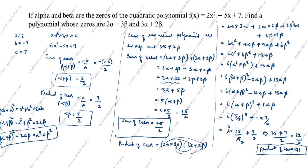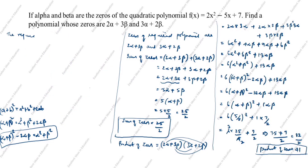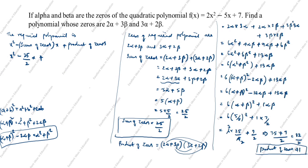Now we will form the new polynomial equation. The required polynomial formula is x² - (sum of zeros)x + (product of zeros). Substituting: x² - (25/2)x + 41. Multiplying throughout by 2, the required polynomial is 2x² - 25x + 82. This is the new polynomial equation. Thanks for watching this video.